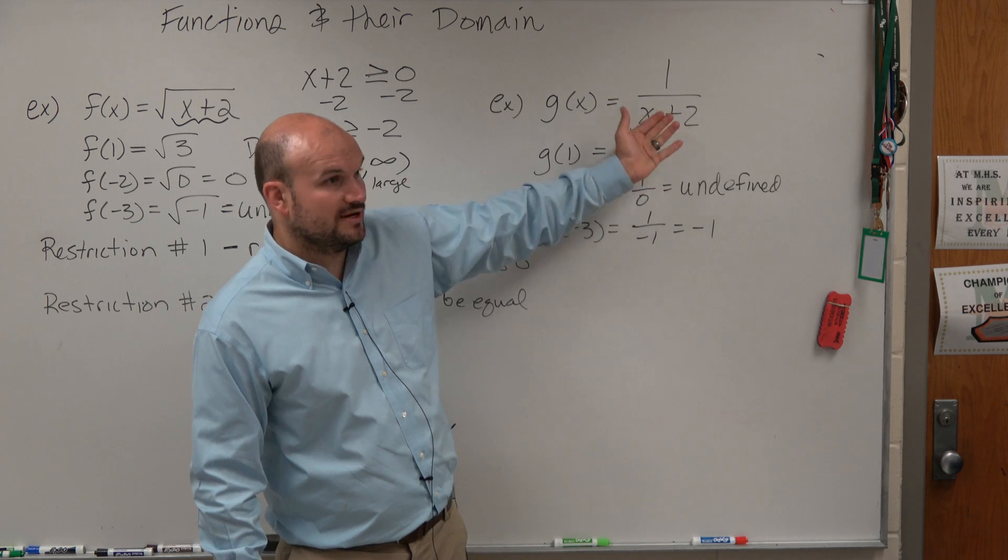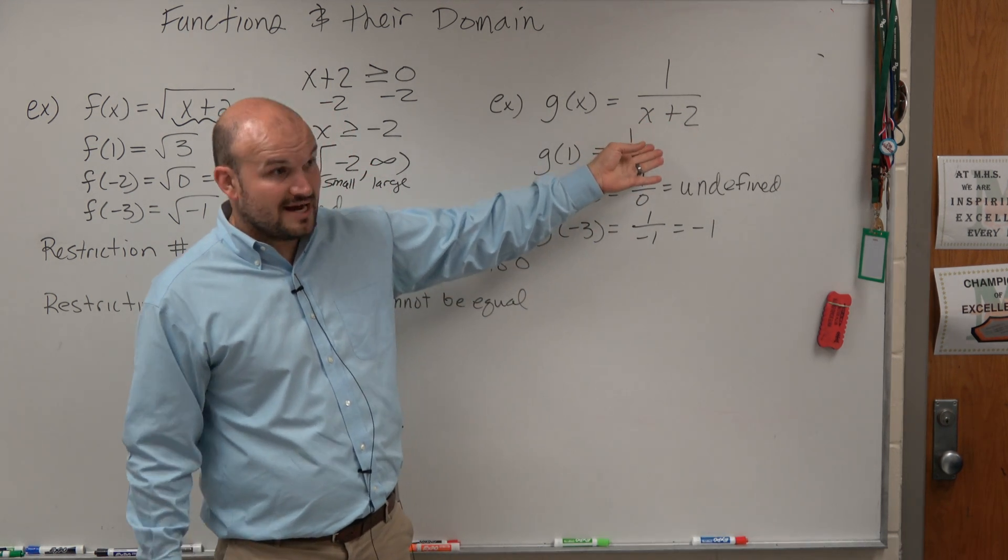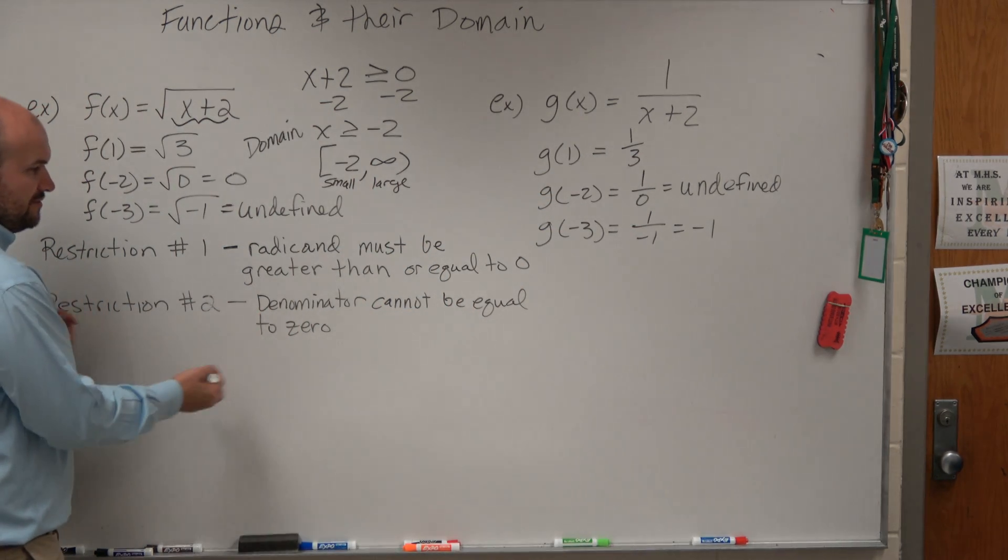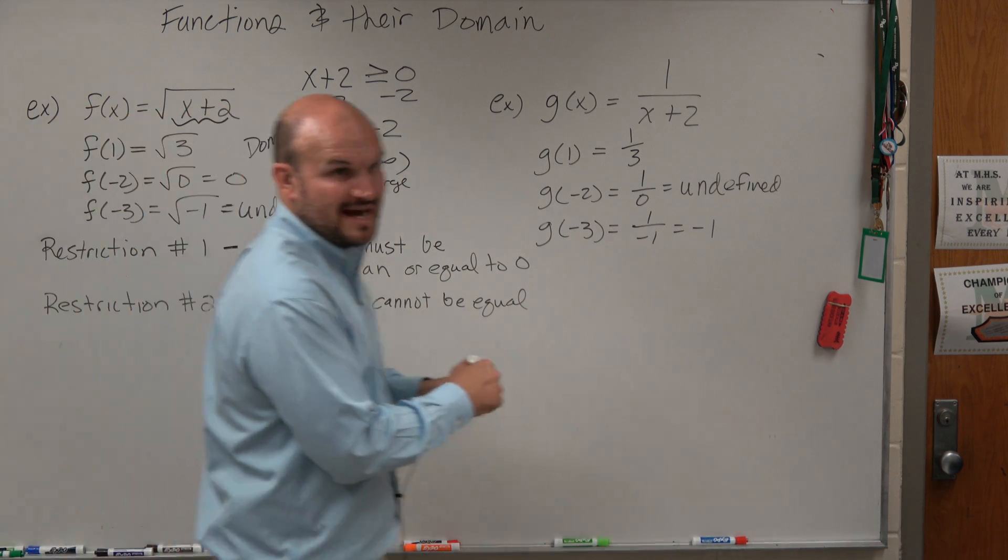So when you guys look at this one, we see we have a denominator, right? There's no radicals. Cool. But we have a denominator. So what do we know about the denominators? Or where our restriction number two? Our denominator cannot equal zero. So what is our denominator in this case?